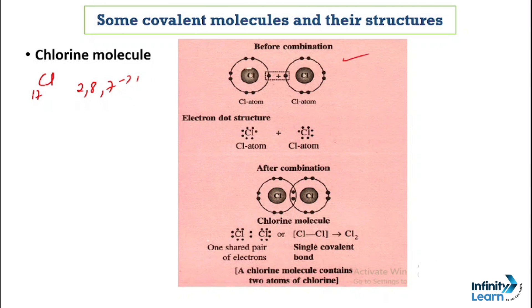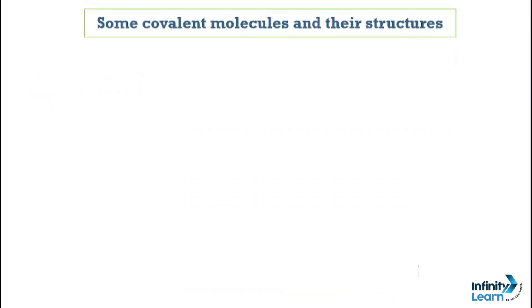So here we can see, before combination, this chlorine bonds with another atom of chlorine. This tells us that at the end, a single covalent bond is seen here. And here how many electrons are shared? Only 1 pair. And at the last, chlorine molecule has 2 atoms.